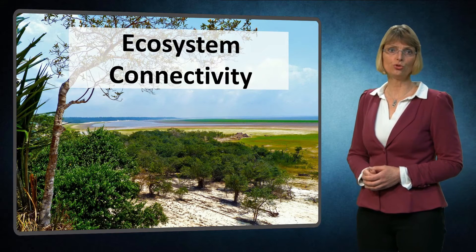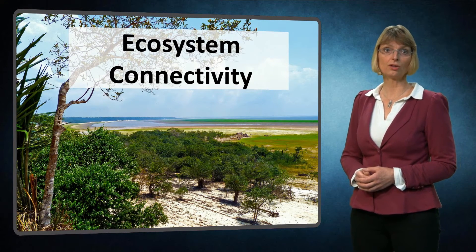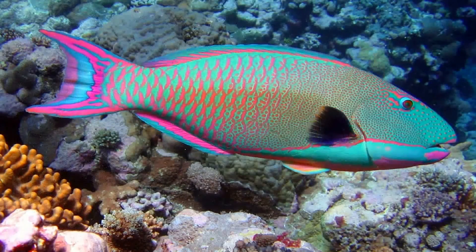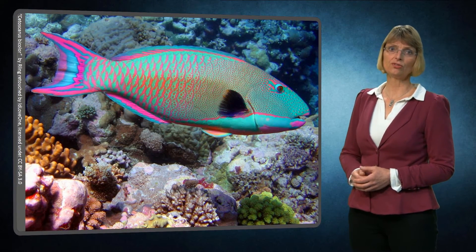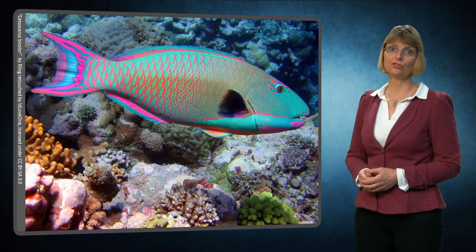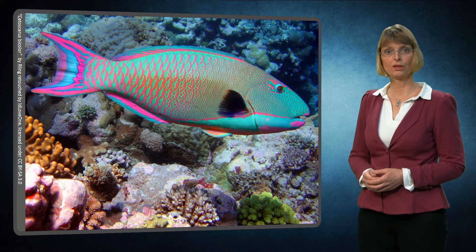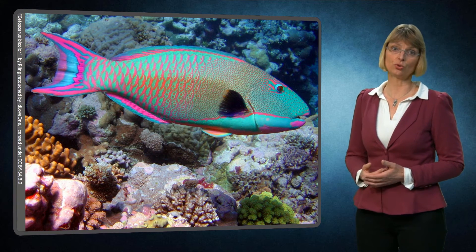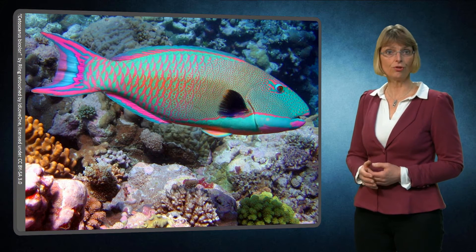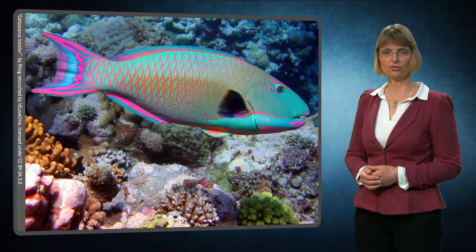A good example is the nursery function of seagrass beds, which is home to the juveniles of many coral fish species, such as the parrot fish. Without the presence of healthy seagrass beds, coral reef fishes might not be present to maintain a healthy coral reef. Also, ecosystems need to be able to exchange genetic resources. This gene flow prevents inbreeding, thus contributes to healthy populations.